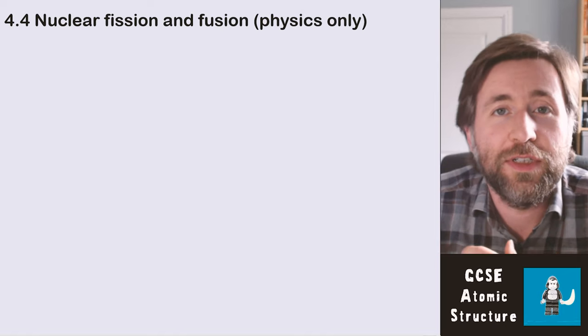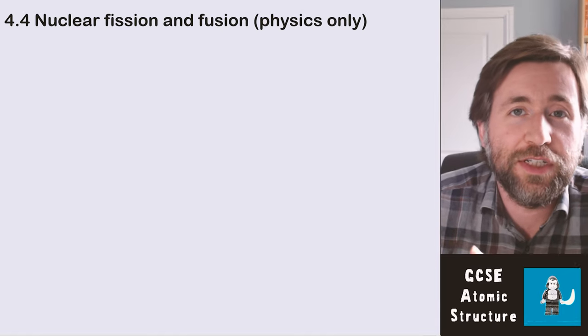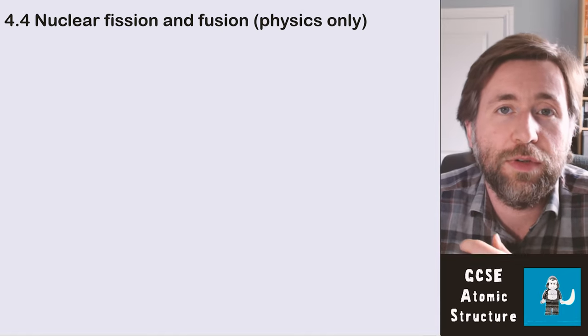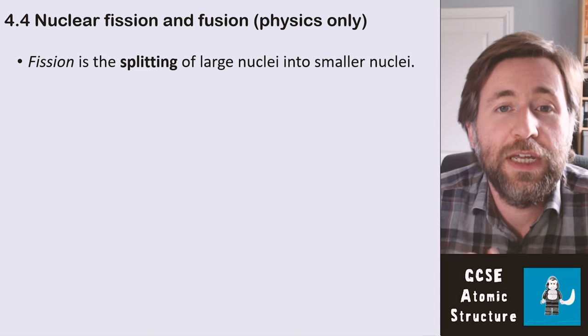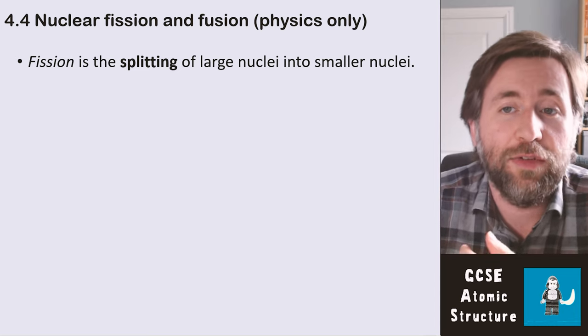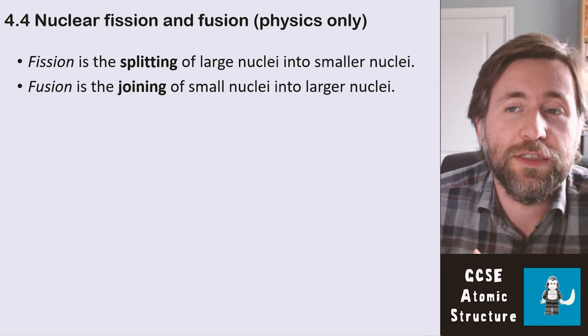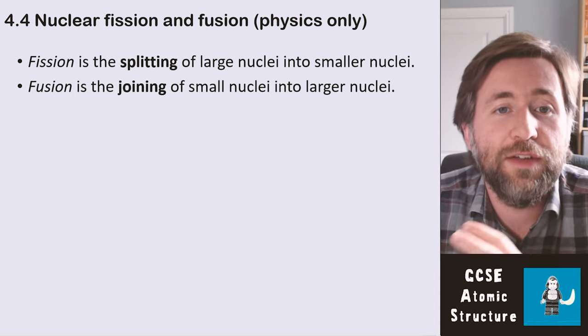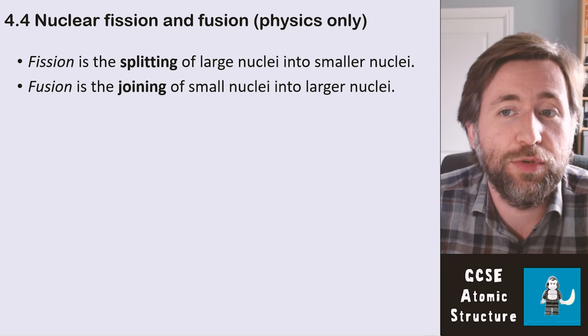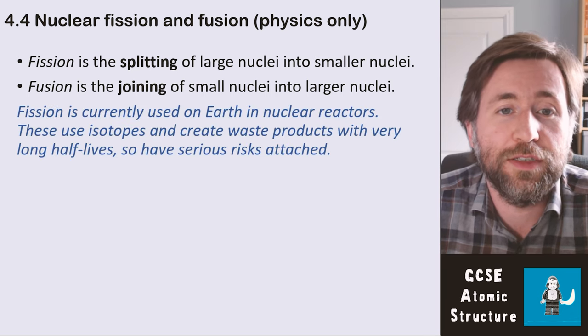Nuclear fission and fusion is only in the GCSE physics, so you don't need to know this for combined science. Fission is the splitting of large nuclei into small nuclei, and fusion is the joining of small nuclei into larger ones.